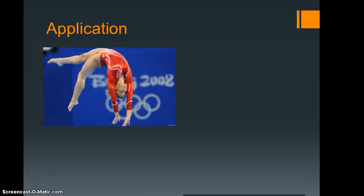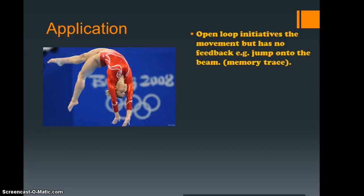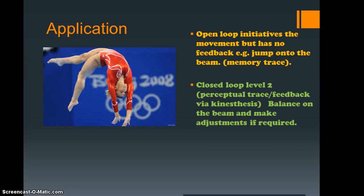Let's look at this example. We've got a gymnast performing the beam. Open loop initiates the movement, but there's a limited amount of feedback because it's a very simple ballistic action. That could be jump onto the beam, initiating the memory trace. Then you would say they're using closed loop level two, gaining feedback through kinesthesis, for example balancing on the beam to make adjustments if needed. But they probably wouldn't be using closed loop level three because they're at a higher level and all they need is minor adjustments. The perceptual trace then finally completes the loop.